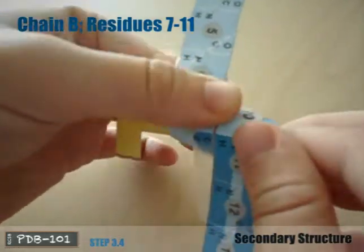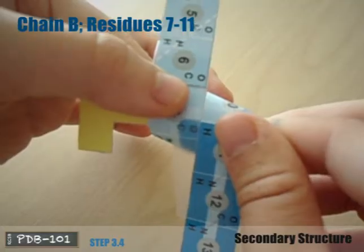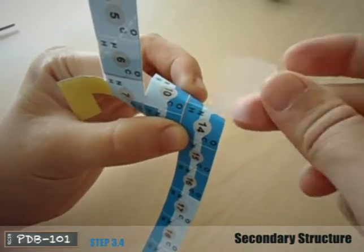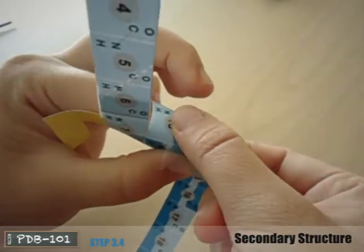Starting with residues 7 and 11, form a hydrogen bond. Keep creating the alpha helix until you reach the end of the darker colored area.